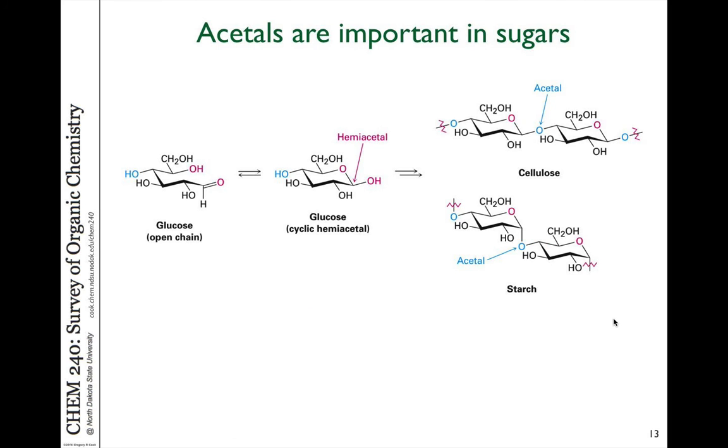Well, acetals are very important in the chemistry of sugar molecules and disaccharides, trisaccharides, polysaccharides. Sugar molecules have a carbonyl group in them, such as glucose. There's an aldehyde functional group in glucose. However, glucose often exists in the more stable cyclic form where an OH group has added to that carbonyl to make a hemiacetal. This is a hemiacetal. You see one O carbon and you see one OH group. So glucose in this form is a cyclic hemiacetal.